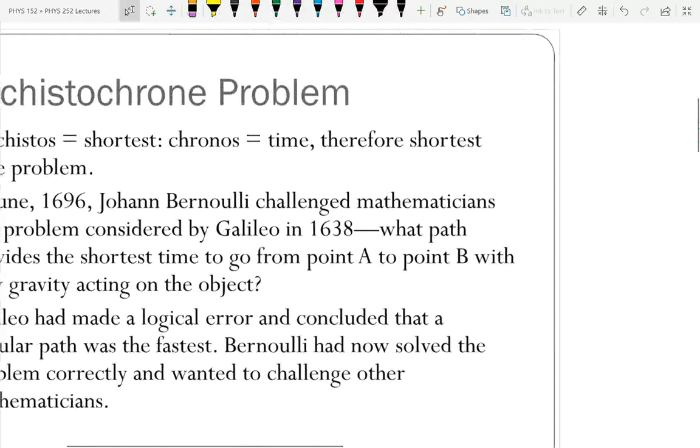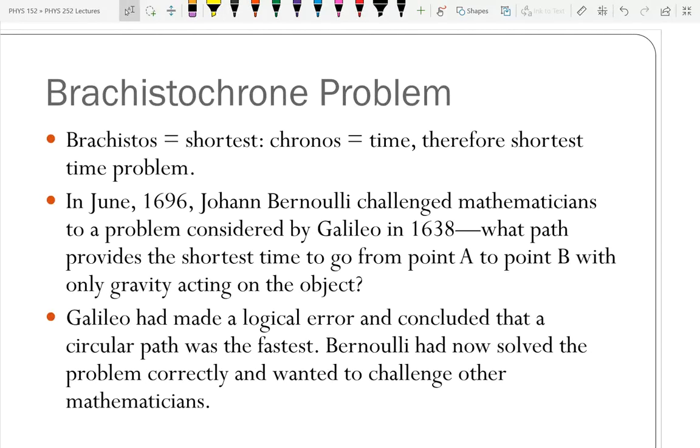Johann Bernoulli had redone the calculation, realized that Galileo was incorrect, and he threw it out there as a challenge.